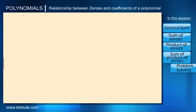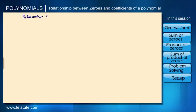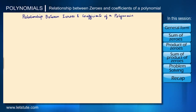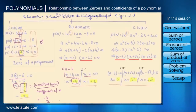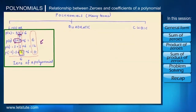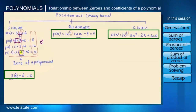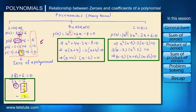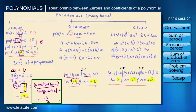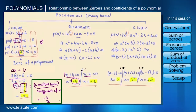Hello everyone. In this session we will be seeing the relationship between zeros of a polynomial and coefficients of a polynomial. Let's quickly recap what we learnt in the previous session. We know what a zero of a polynomial is, how to find it by equating with zero and factorizing. We also saw the relation between zeros and coefficients of a linear polynomial, which is minus b upon a.